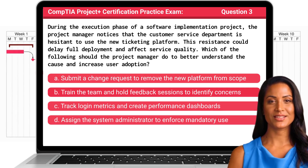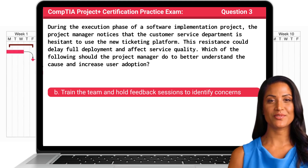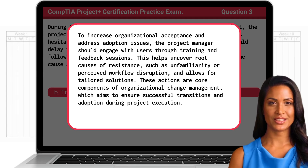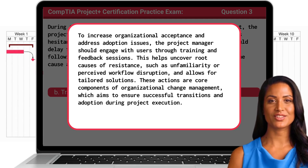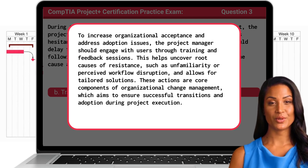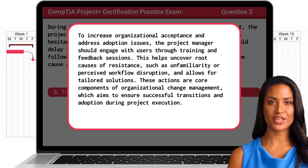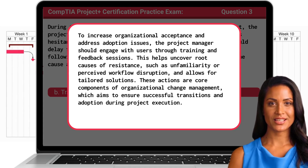The answer is B: Train the team and hold feedback sessions to identify concerns. To increase organizational acceptance and address adoption issues, the project manager should engage with users through training and feedback sessions. This helps uncover root causes of resistance, such as unfamiliarity or perceived workflow disruption, and allows for tailored solutions. These actions are core components of organizational change management, which aims to ensure successful transitions and adoption during project execution.